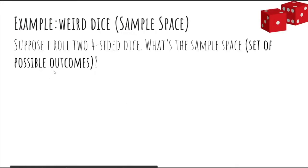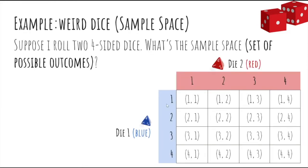Okay, so let's go through an example. Suppose that I roll two four-sided dice. What's the sample space, or the set of possible outcomes? Well, there are four outcomes for the first die, and there are four outcomes for the second die. So if you consider all possible combinations of outcomes, you can see that there are actually 16 total outcomes.